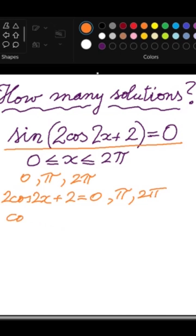After rearranging, cosine of 2x will be minus 1, or pi minus 2 over 2, or pi minus 1.